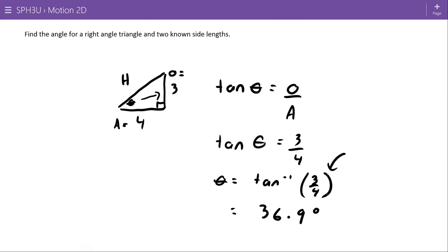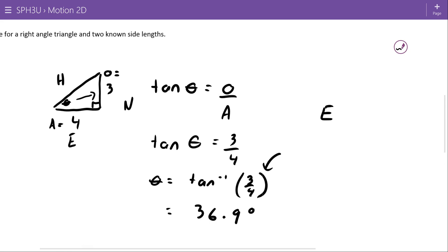And just as I've drawn it here, if we presume that this was east and this was north and we wanted to write that as a heading, we would say that as east, because we went east first, then we went north. So we would say that's east 36.9 degrees north.